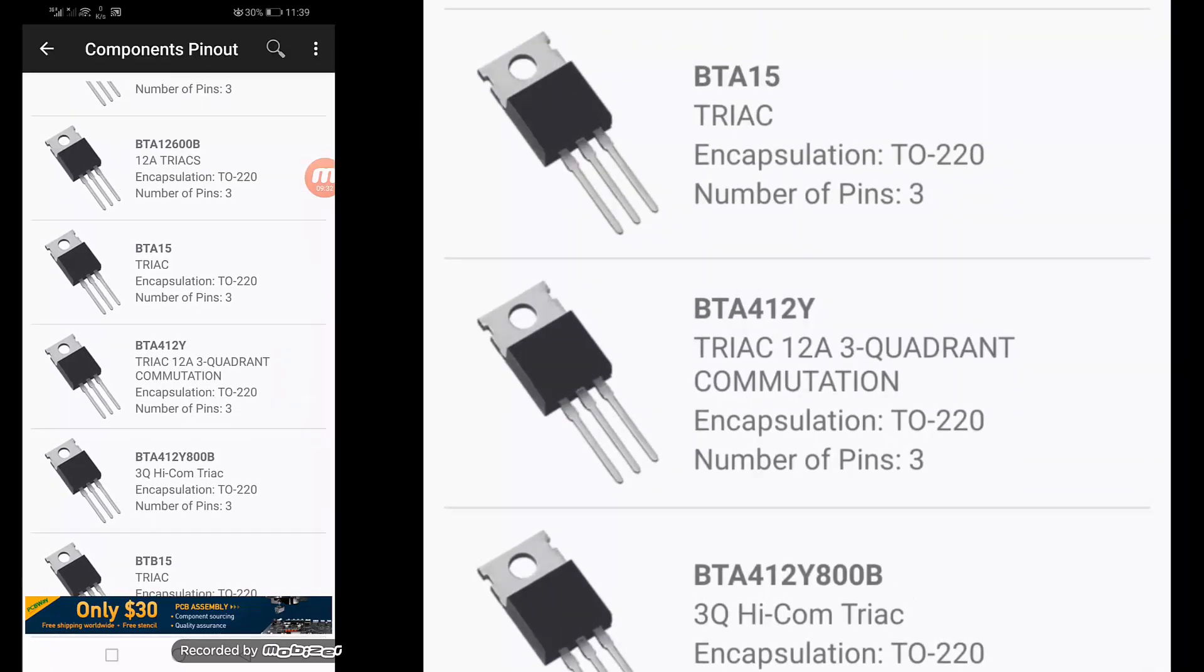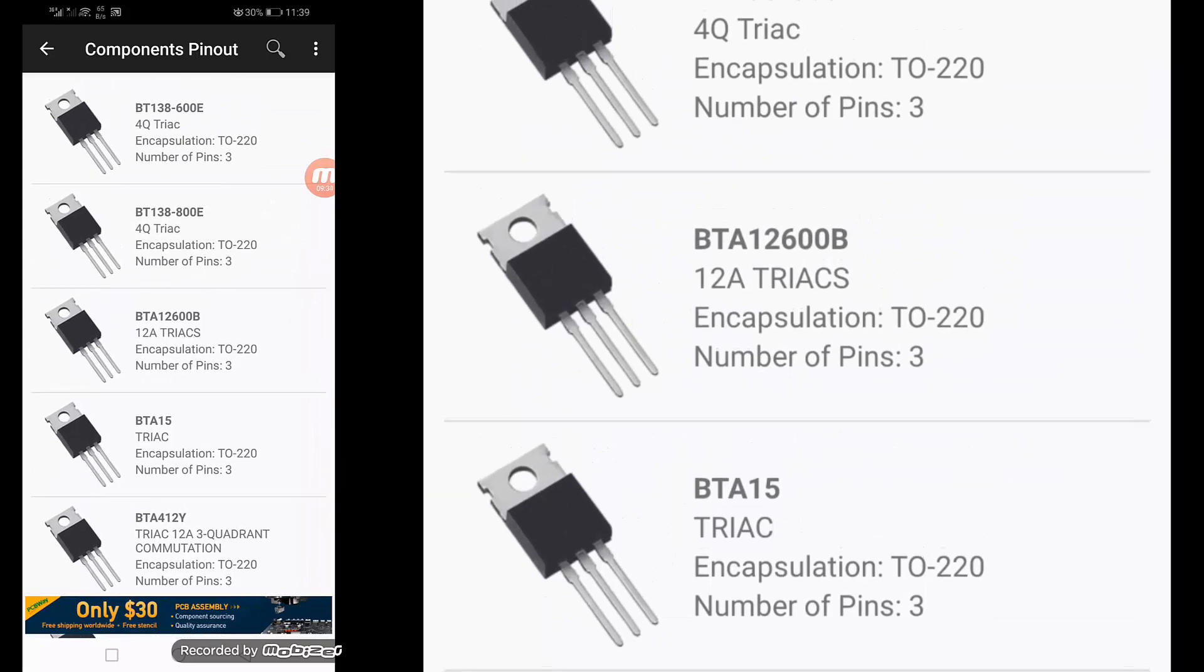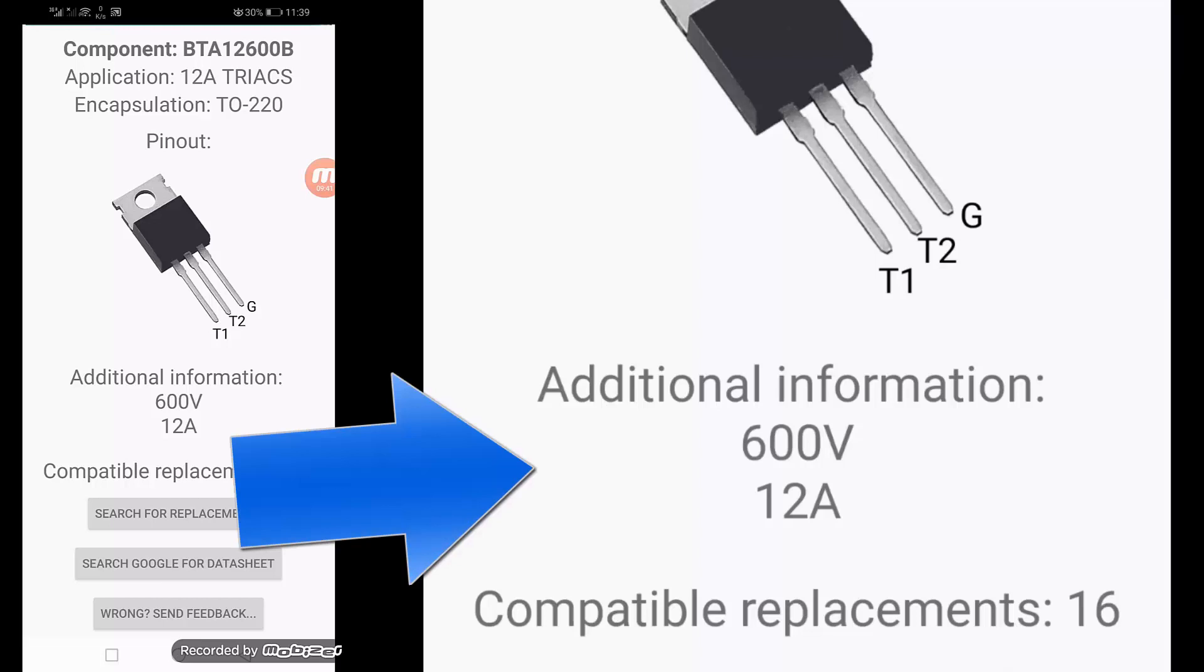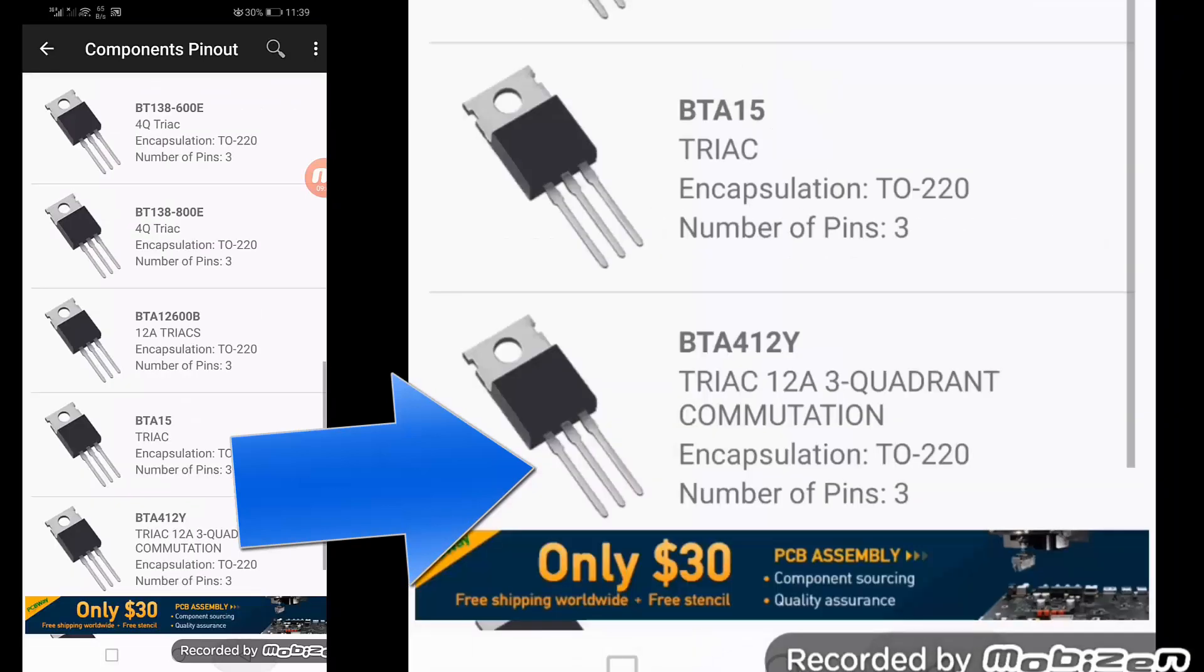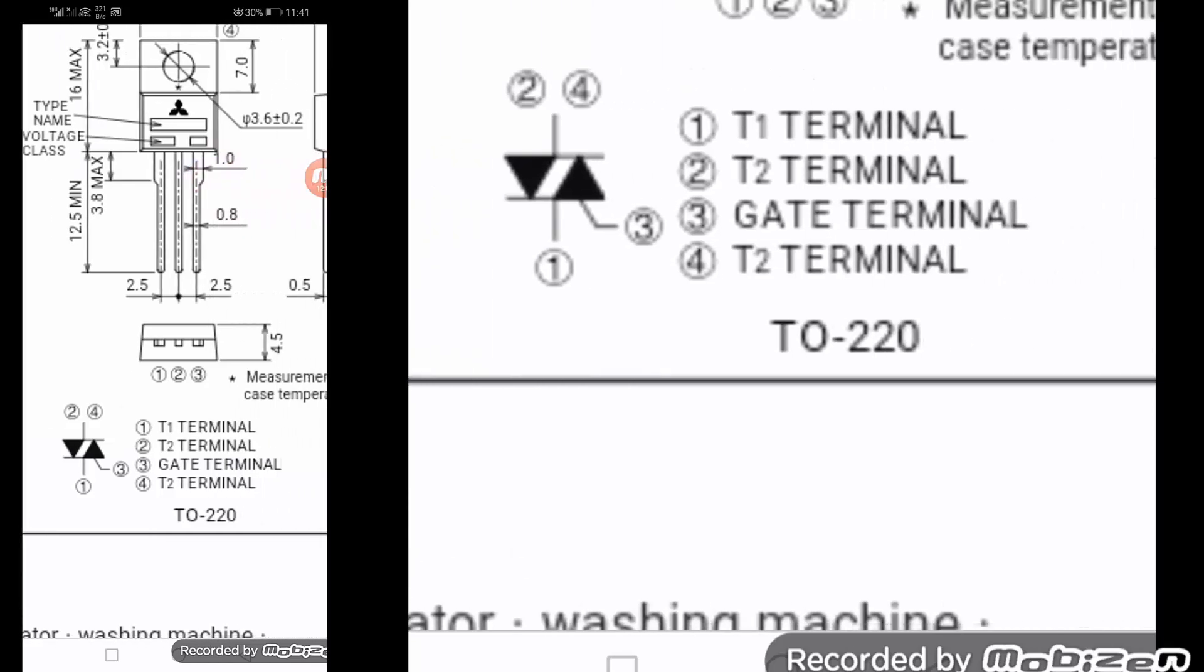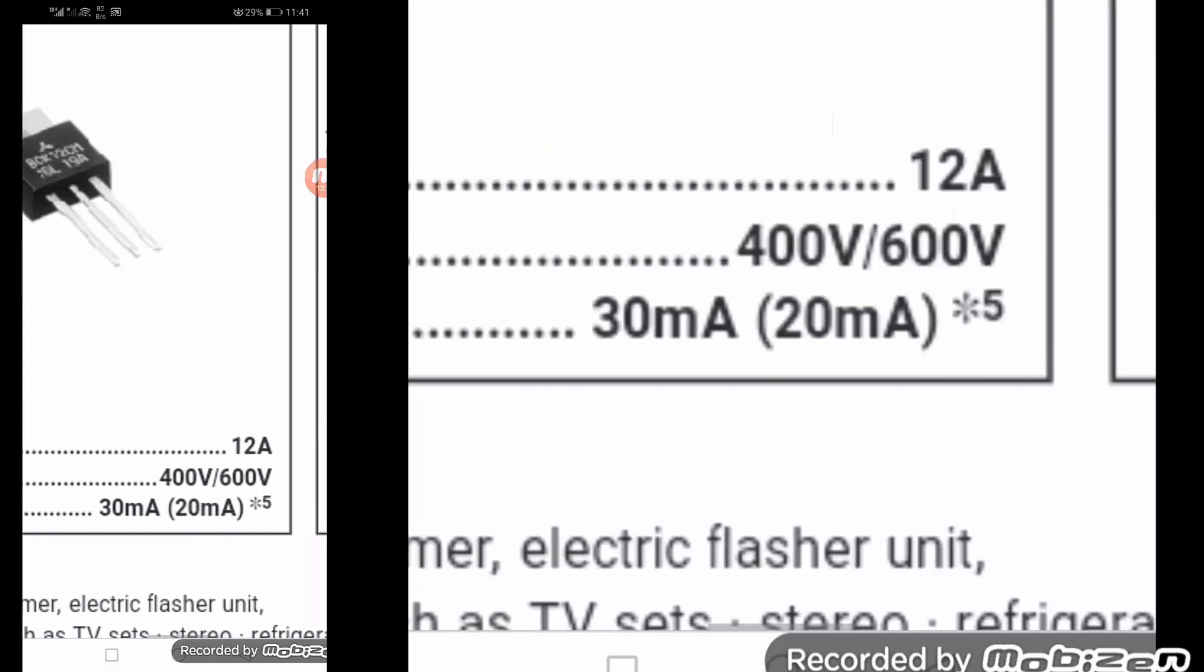For example, we need to check this BTA12-600. So it is 600 volt, 12 ampere. We can check the datasheet. So it is the same: T1, pin number 3 that is trigger, pin 1 is terminal 1, terminal 2, and the body. It is 12 ampere, 600 volt.